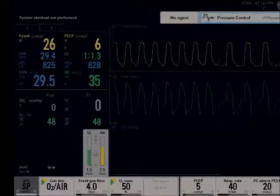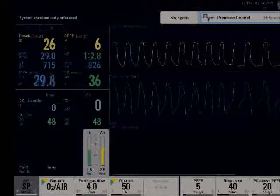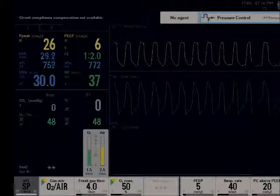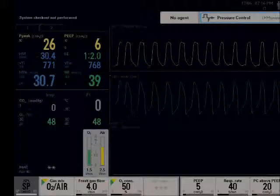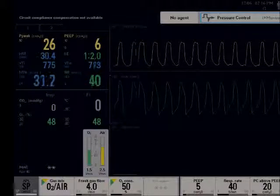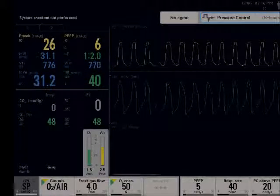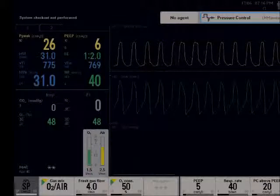And on 40, you start to see we're starting to generate a little auto PEEP. If we look at our measured PEEP on the top left hand corner, we have a PEEP of 6. So we're not generating a lot of auto PEEP at all.